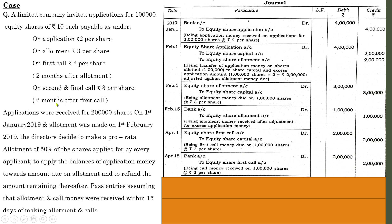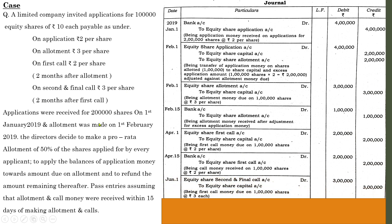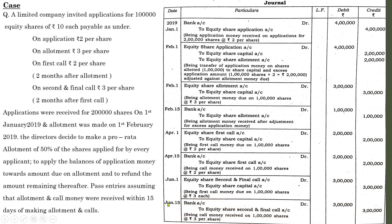Second and final call is rupees 3 per share, 2 months after the first call. Two months after April 1 is June 1. Entry: equity share second and final call account debit to equity share capital. Value is 3 per share on 1 lakh shares, so 3 into 1 lakh equals 3 lakhs. Being final call money due on 1 lakh shares at rupees 3. Payment entry on June 15: bank account debit to equity share second and final call, same amount.